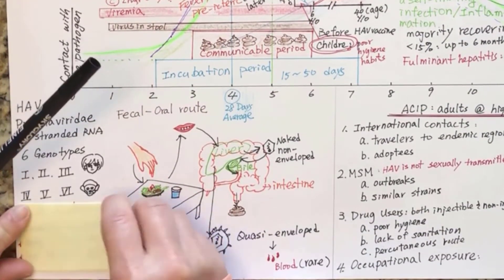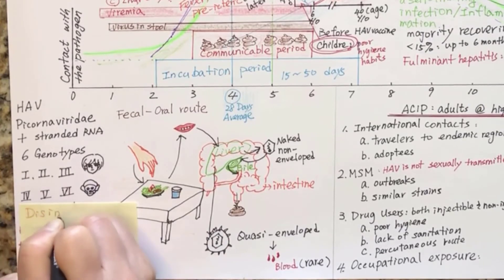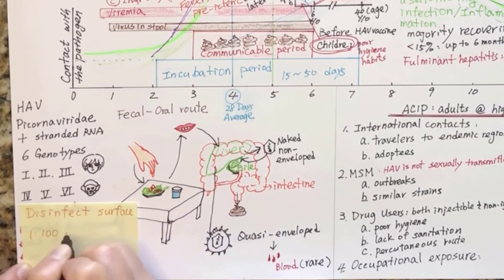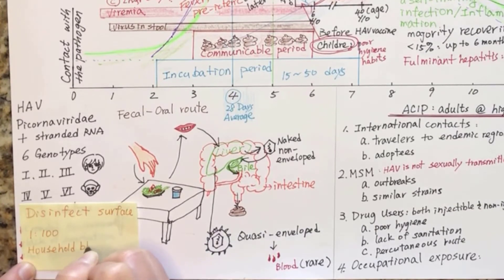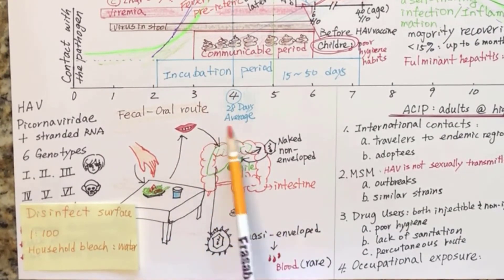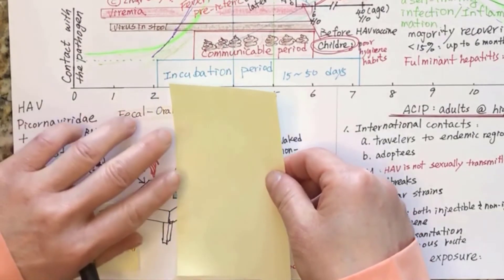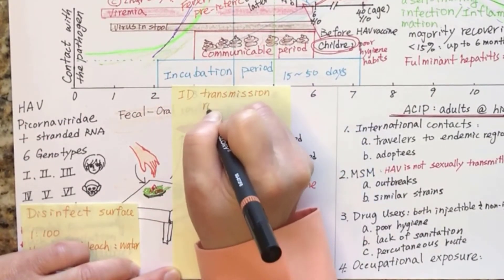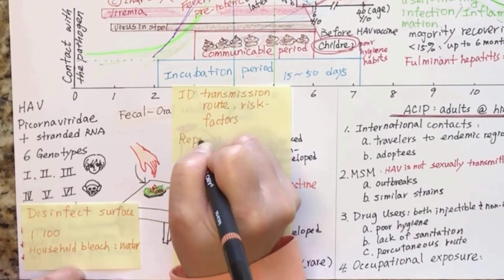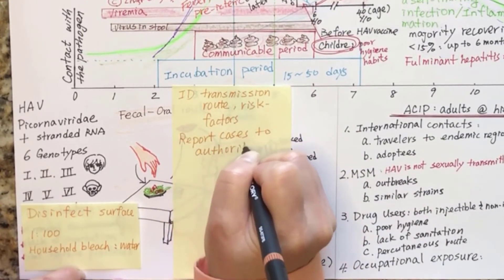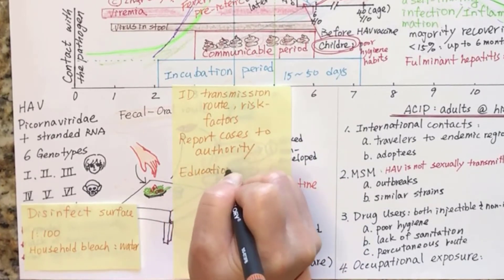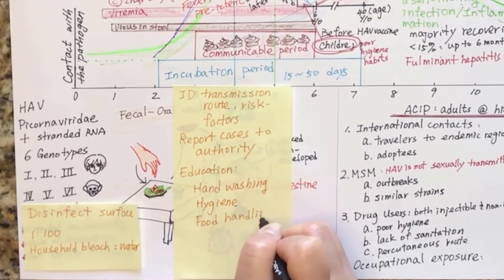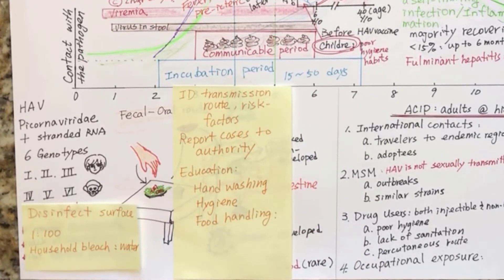Use diluted household bleach solution to disinfect surfaces. To dilute household bleach, use one part of household bleach to 200 parts of tap water. Identify the transmission route and measure risk factors that contribute to the spread of the infection. Hepatitis A, B, and C are all reportable infectious diseases. Teach the patient, family, and community on appropriate handwashing technique and encourage good hygiene practices.